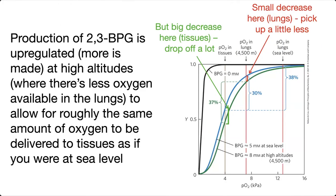Another key thing about 2,3-BPG is that its production is upregulated — more of it is made at high altitudes. This is important because there's less oxygen available at high altitudes. It might seem counterintuitive that you'd decrease your affinity for oxygen in a place where there isn't very much oxygen, but you have to think about the shape of the hemoglobin curve. With hemoglobin curves, you're comparing two places — oxygen in your lungs versus that in your tissues — and that tells you how much you're actually releasing.